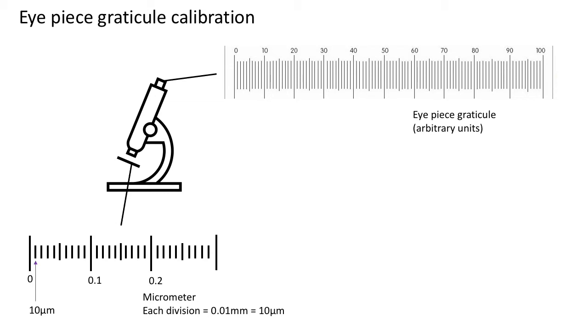The first thing you have to do if you want to use the eyepiece graticule is to calibrate it against the micrometer. Once you've done that, you can move around your sample anywhere and you will always be able to position that sample on the eyepiece graticule and take a measurement because you will know what each of those divisions is equal to.